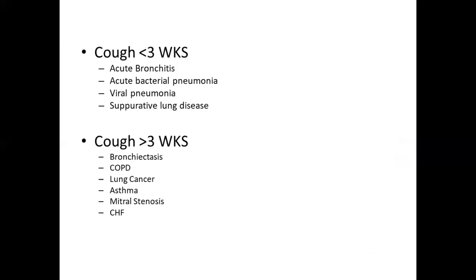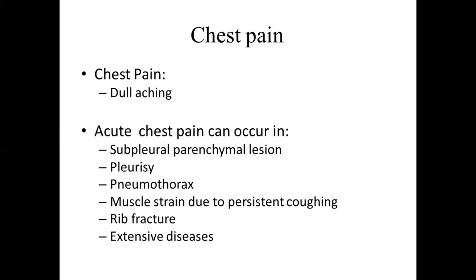If the patient has a cough of less than three weeks, consider other differentials such as acute bronchitis, acute bacterial pneumonia, viral pneumonia, or other suppurative lung disease. For cough of more than three weeks, differentials beyond pulmonary tuberculosis include bronchiectasis, COPD, lung cancer, asthma, or heart failure due to mitral stenosis or other causes of congestive heart failure. The second most common symptom is chest pain, which is usually dull-aching. However, the patient may present with acute-onset chest pain in cases of subpleural parenchymal lesion, pleurisy, pneumothorax, muscle strain due to persistent cough, or with extensive pulmonary disease.